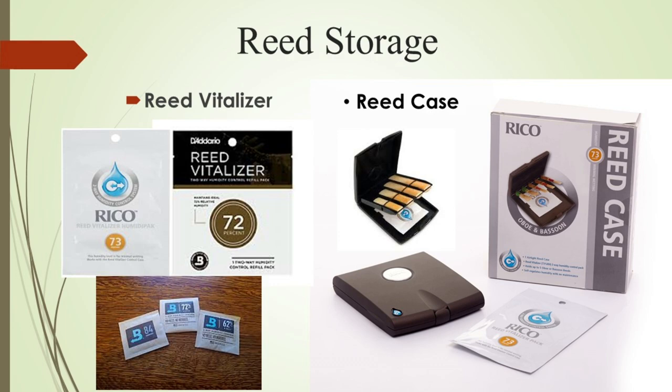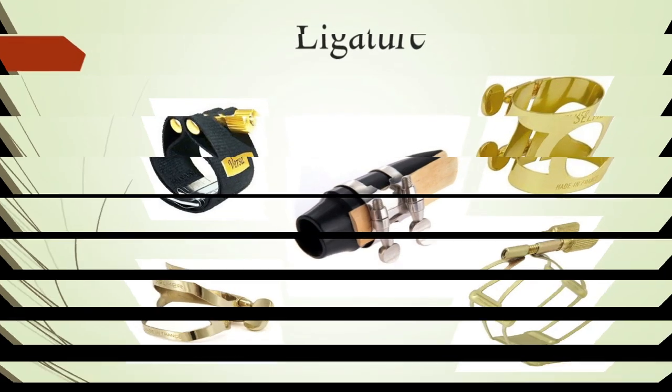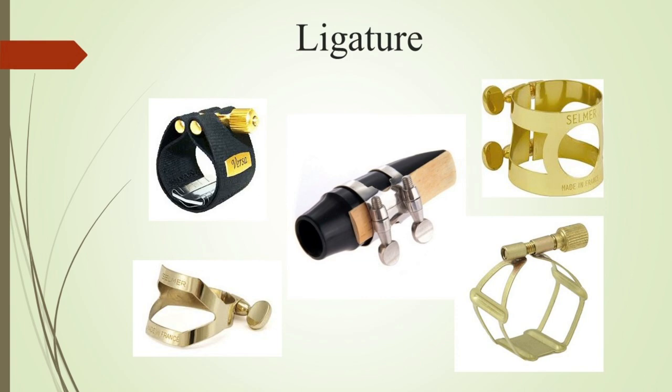This pouch comes in different numbers which represent the percentage of moisture they provide for reeds. We usually recommend 72 percent moisture — that means any vitalizer which has the number 72 written on it. In the market you can find reed cases, but you can manage at home with any airtight container and a humidity pouch, which are usually meant for keeping cigars — they also serve the purpose and are quite economical.